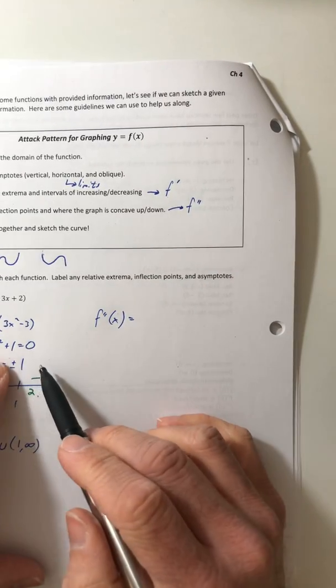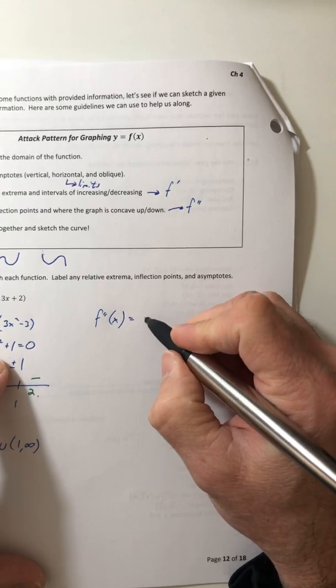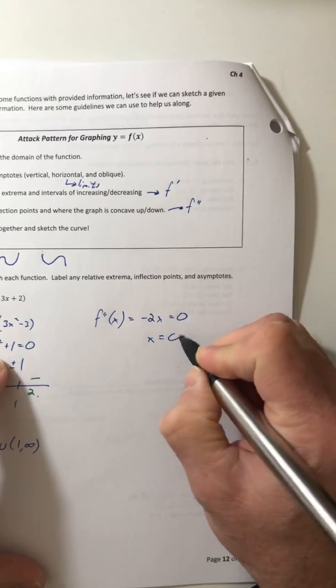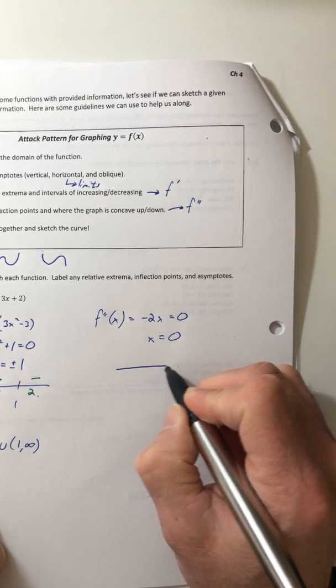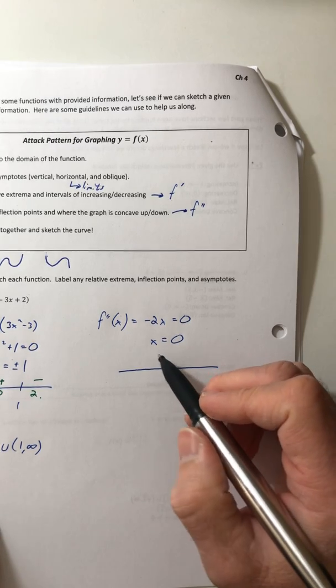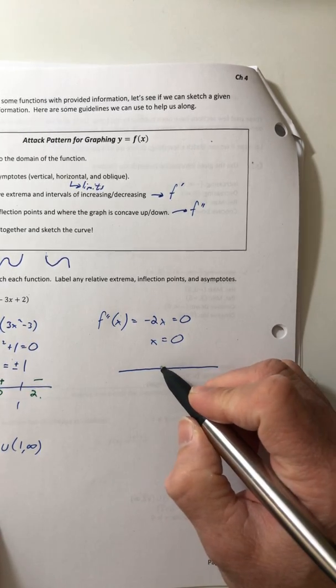All right, so second derivative, we can go off of this guy. So that would be negative two x is equal to zero. So x is zero. So now you have a possible inflection point. And I say possible because it's not a guarantee. You got to test it.